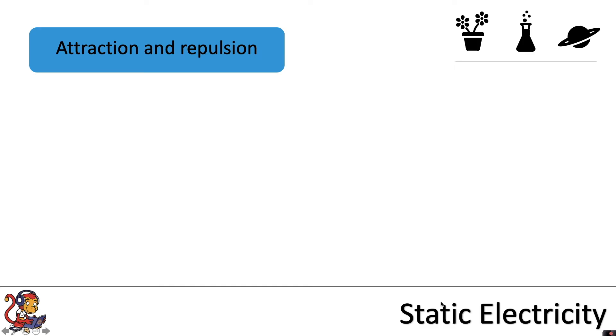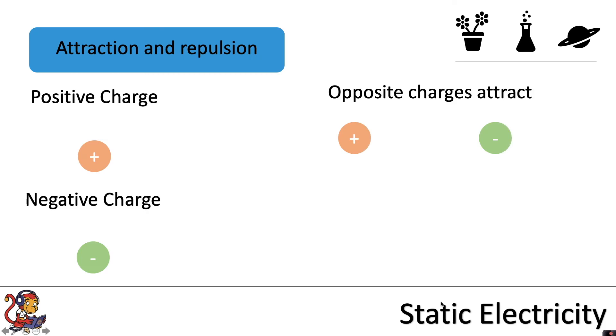We said earlier there are two types of charge, positive charge and negative charge. Like we saw with the balloon and the jumper, opposite charges attract, so positive charges and negative charges will attract each other, and like charges which means the same charge will repel.